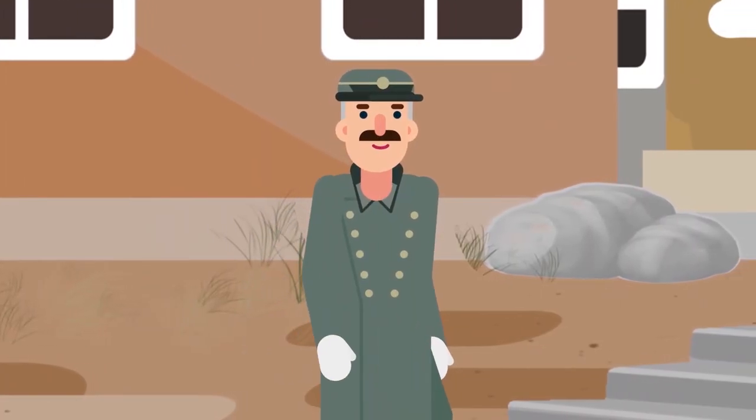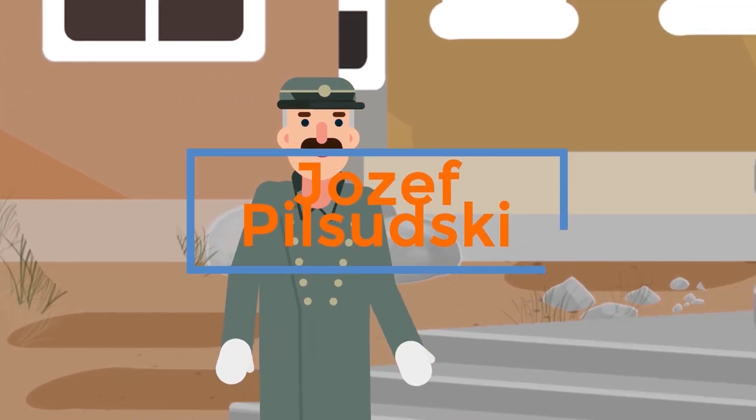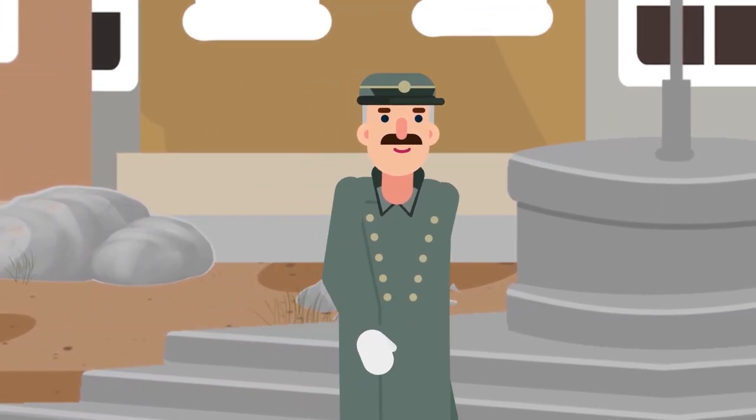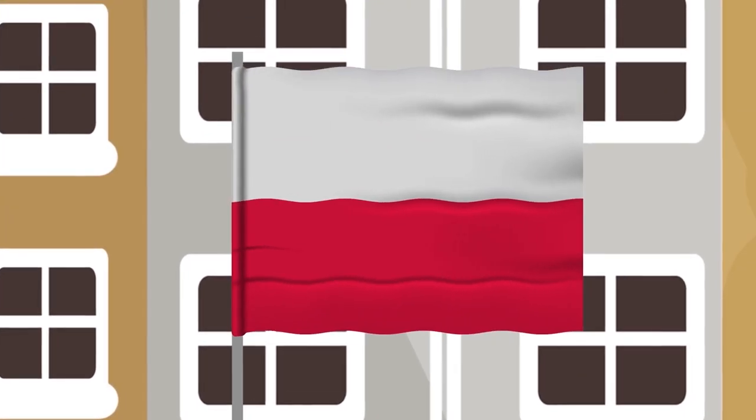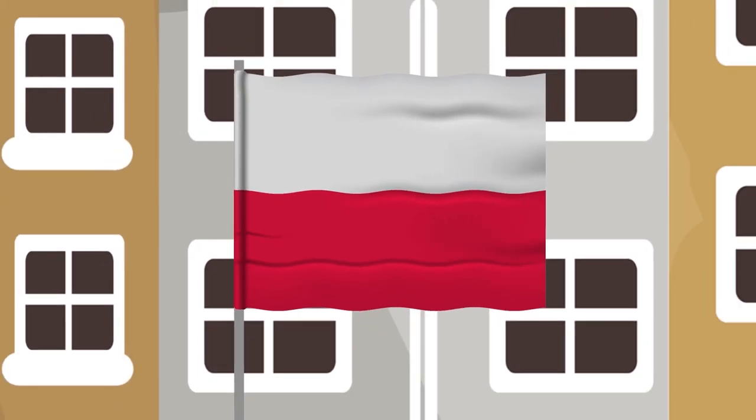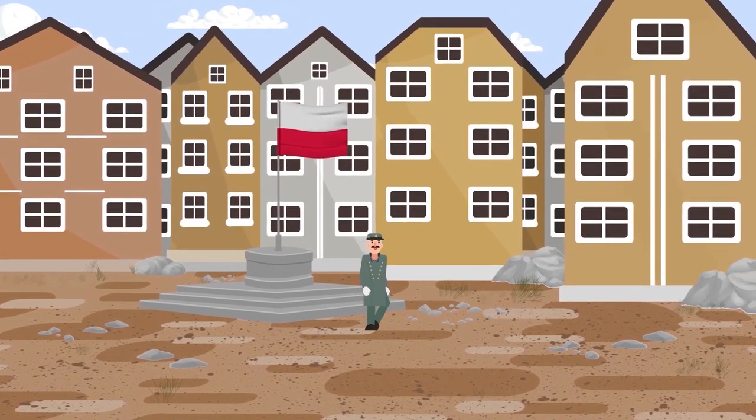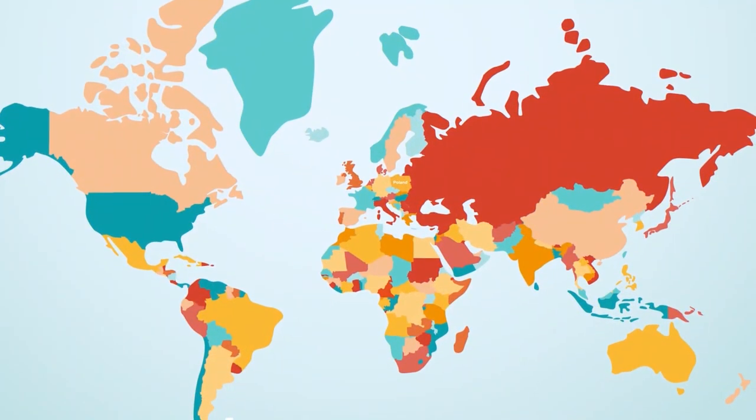On the same day, Marshal of Poland Joseph Pilsudski became the head of state and formed the first democratic government. After 123 years of occupation by Prussia, the Austro-Hungarian and Russian empires, Poland gained independence.